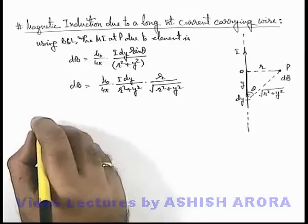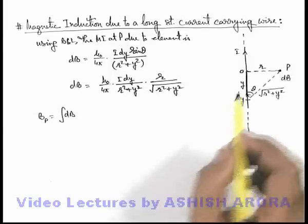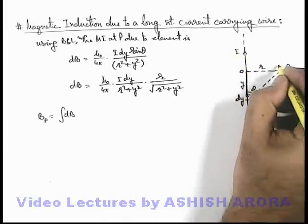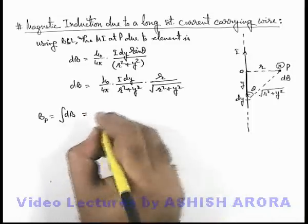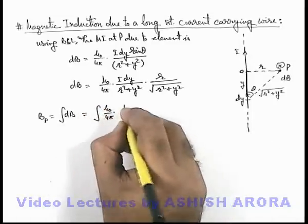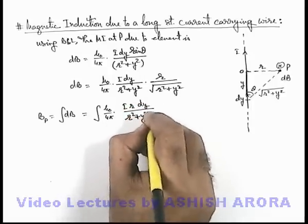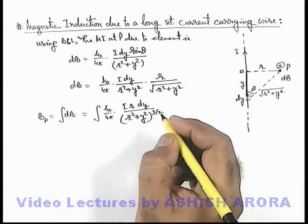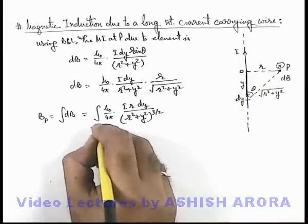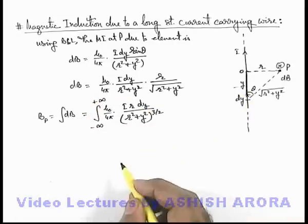The total magnetic field at point P can be written as the integration of dB due to all elements on the wire, where the magnetic field exists in the inward direction, so all contributions add up. This gives B = ∫(μ₀/4π) · (i·r·dy) / (r² + y²)^(3/2). As the wire is extended to infinite length, the integration limits are substituted from minus infinity to plus infinity for the variable y.